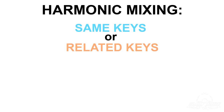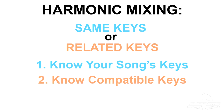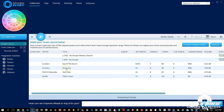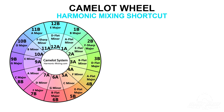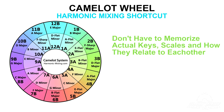In the last video we defined harmonic mixing as mixing tracks that are in the same key or related keys. Harmonic mixing consists of two elements: knowing the key of every song that you play, and knowing which keys are compatible. Once you figure out the keys of your songs either by ear or with software like Mixing Key, you can use this diagram called the Camelot wheel to easily figure out which keys are compatible with each other. You can sort of think of the Camelot wheel like a shortcut to learning how to mix harmonically without having to memorize all the keys and how they relate to each other.